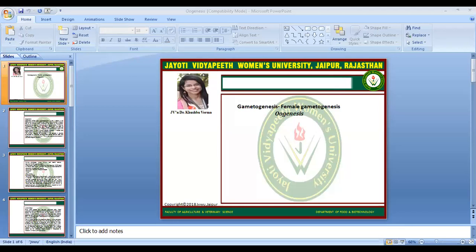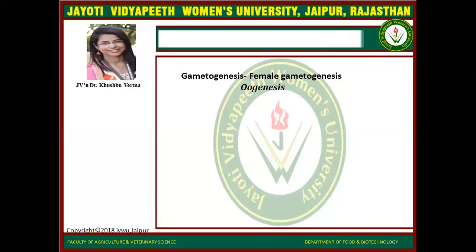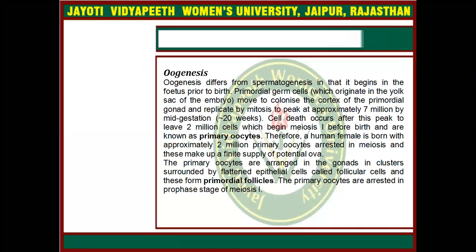Oogenesis differs from spermatogenesis in that it begins in the fetus prior to birth. Primordial germ cells, which originate in the yolk sac of the embryo, move to colonize the cortex of the primordial gonad and replicate by mitosis to peak at approximately 7 million by mid-gestation, which is approximately 20 weeks.